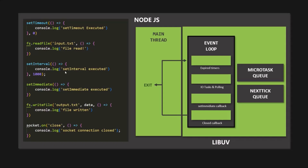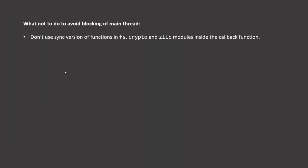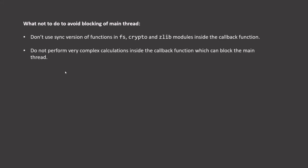As a developer, it is your responsibility not to block the event loop in your Node.js application. Here are some guidelines: Don't use synchronous versions of functions in the FS, Crypto, and Zlib modules inside callback functions. Using synchronous code in top-level code is acceptable since it runs before the event loop starts and only once. Don't perform very complex calculations inside callback functions, as this can take a long time and block the main thread. Also be careful with JSON in very large objects — parsing or stringifying large JSON can start to take a long time.